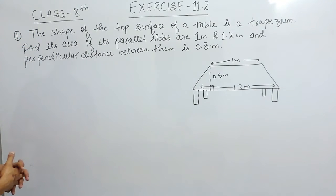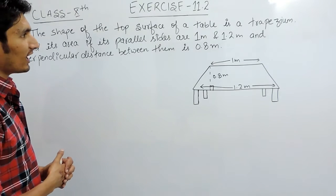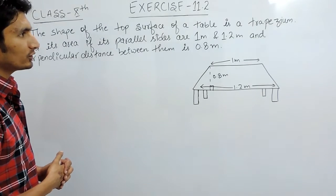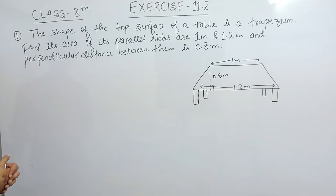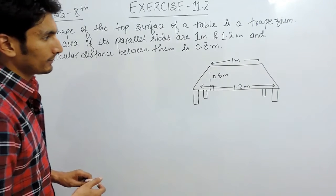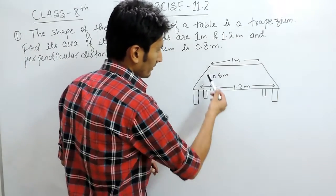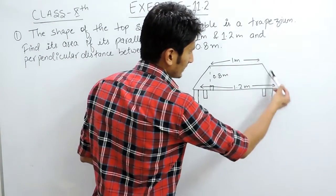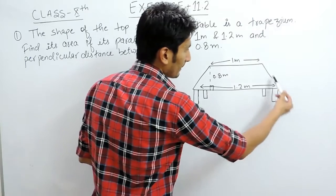You have to find its area if its parallel sides are 1 meter and 1.2 meters and the perpendicular distance between them is 0.8 meters. This is a table where the upper surface is in the form of a trapezium.